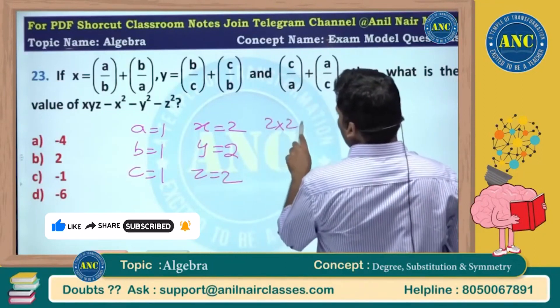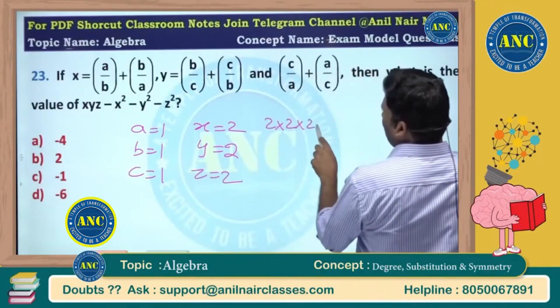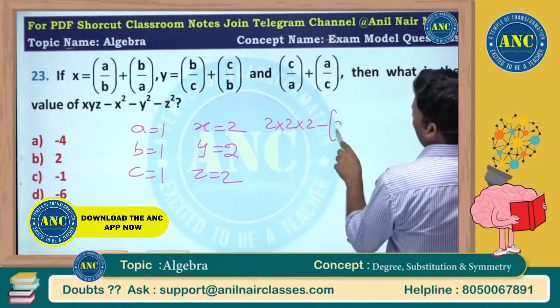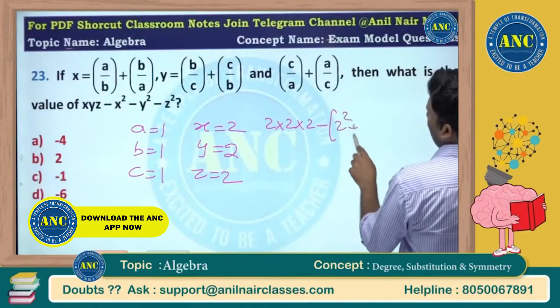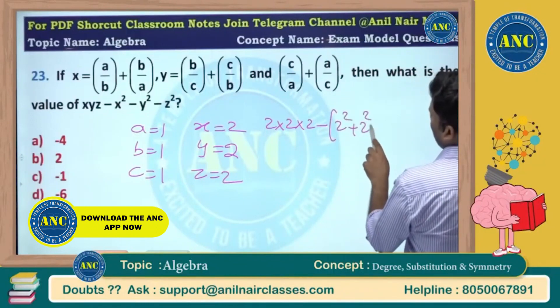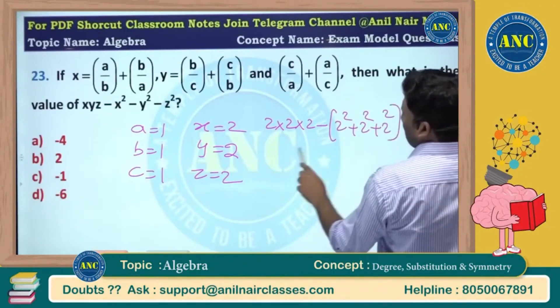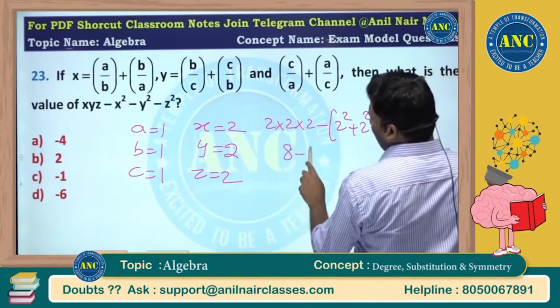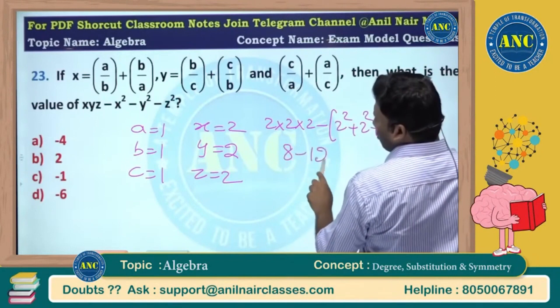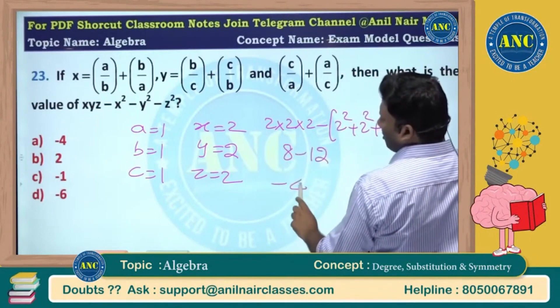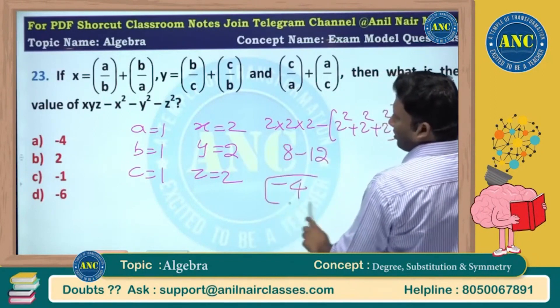So 2 into 2 into 2 minus of 2 square plus 2 square plus 2 square. This is 8 minus 12. Answer is minus 4.